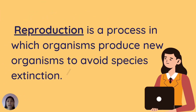Males and females have a unique reproductive system to perform reproduction. Reproduction is a process in which organisms produce new organisms to avoid species extinction. In humans, sexual reproduction happens, meaning the process needs both male and female. Therefore, it is important to study our reproductive system for us to be aware and responsible on how to take good care of it.